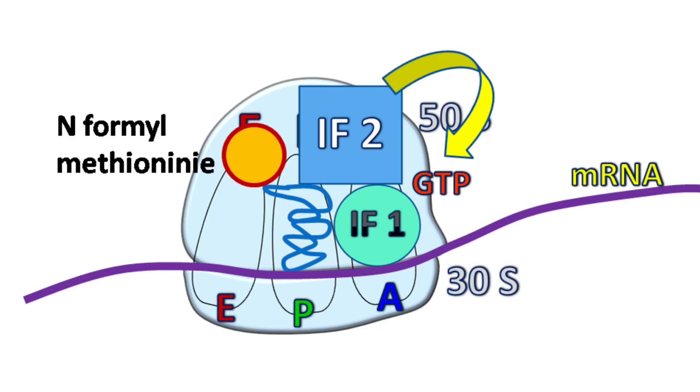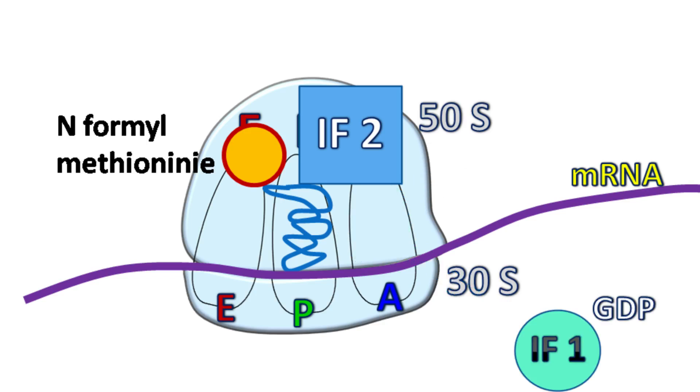Next, GTP associated with IF1 is hydrolyzed to GDP by IF2. As GDP is hydrolyzed, IF1 GDP now releases to A side.